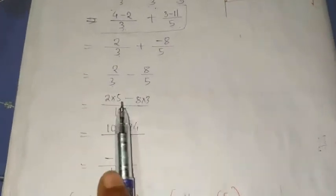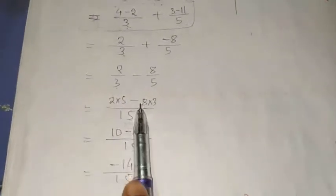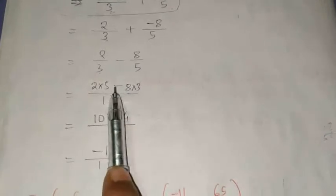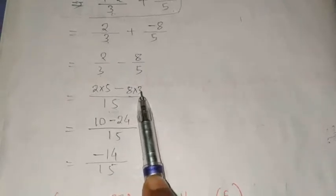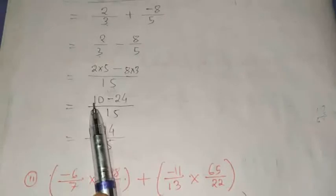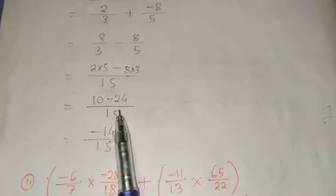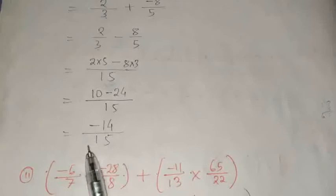We have to take the LCM of 3 and 5, which is 15. Divide the LCM by the denominator and multiply with the numerator. Dividing 15 by 3 gives 5, so multiply 5 with numerator 2 to get 10. Dividing 15 by 5 gives 3, so multiply 3 with 8 to get 24. We get 10 minus 24 by 15. The answer is minus 14 by 15.